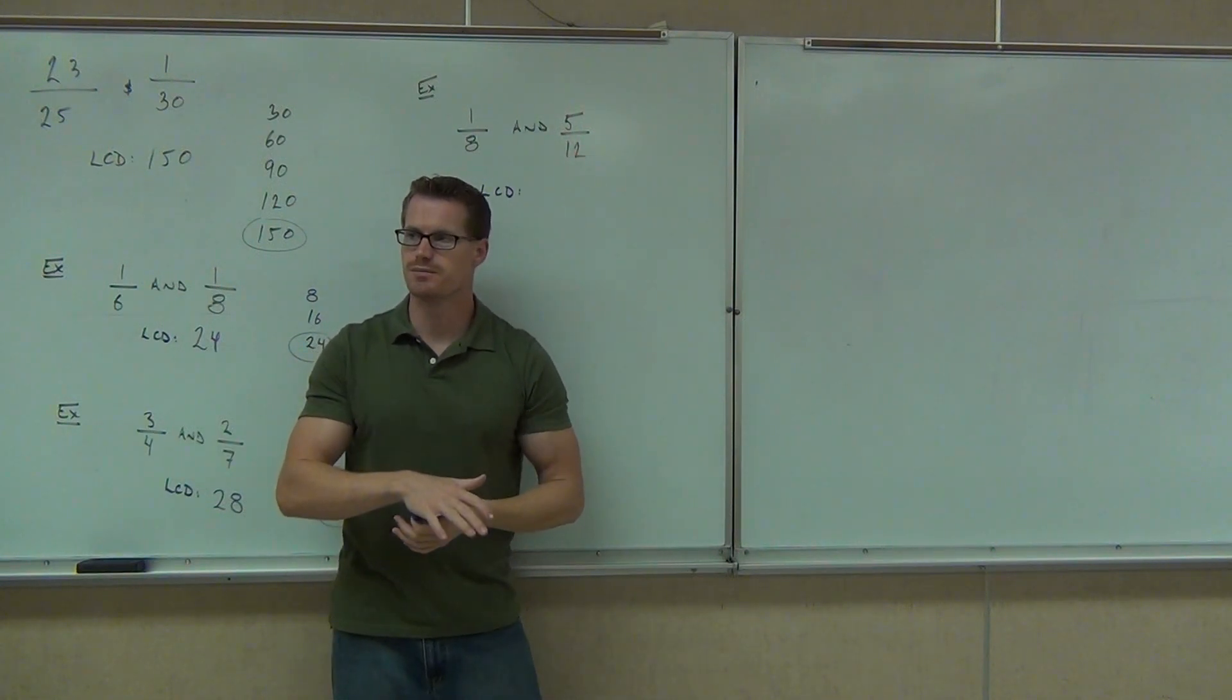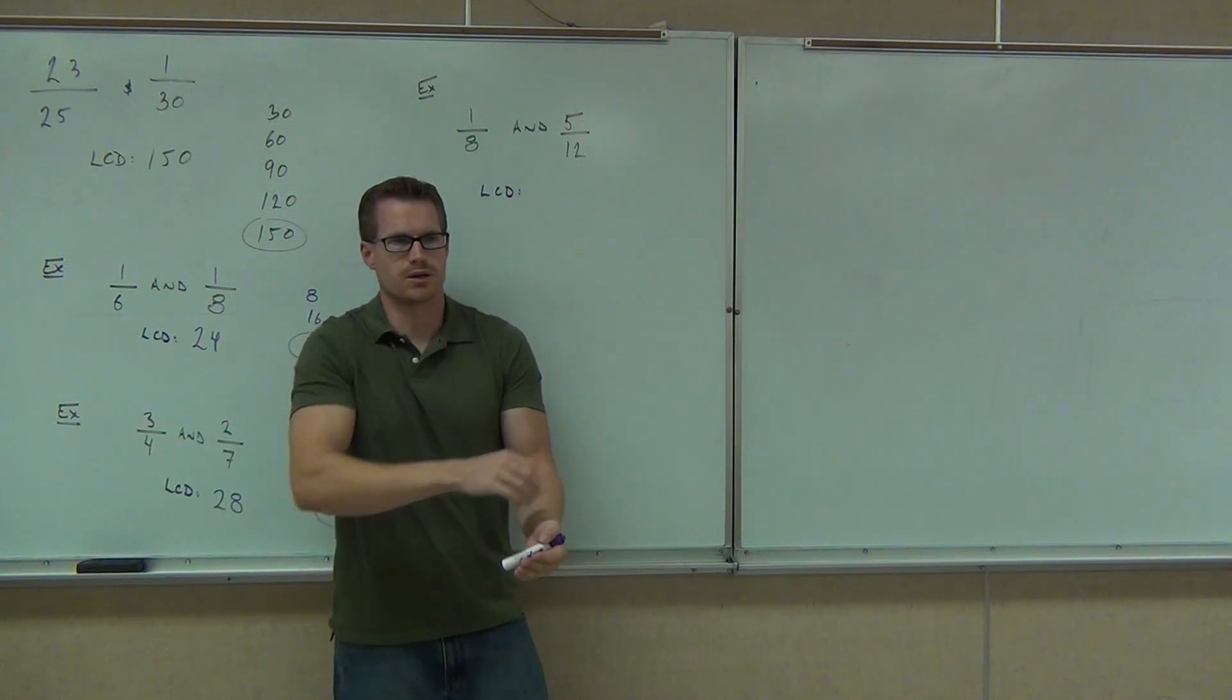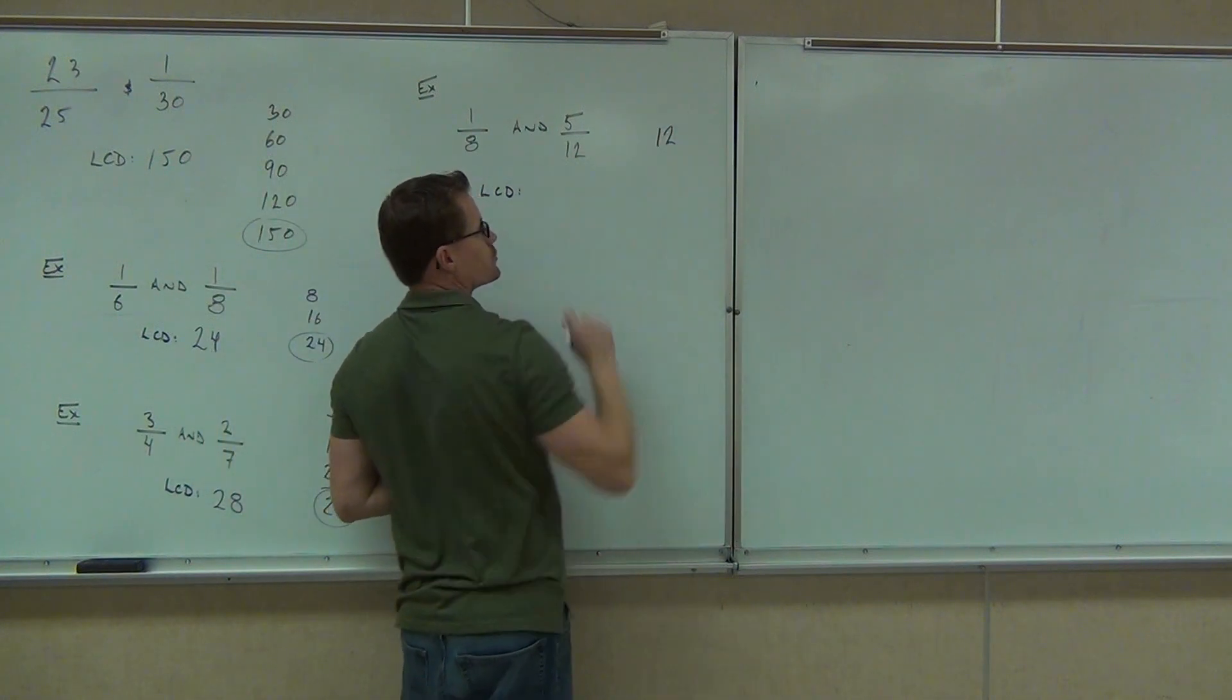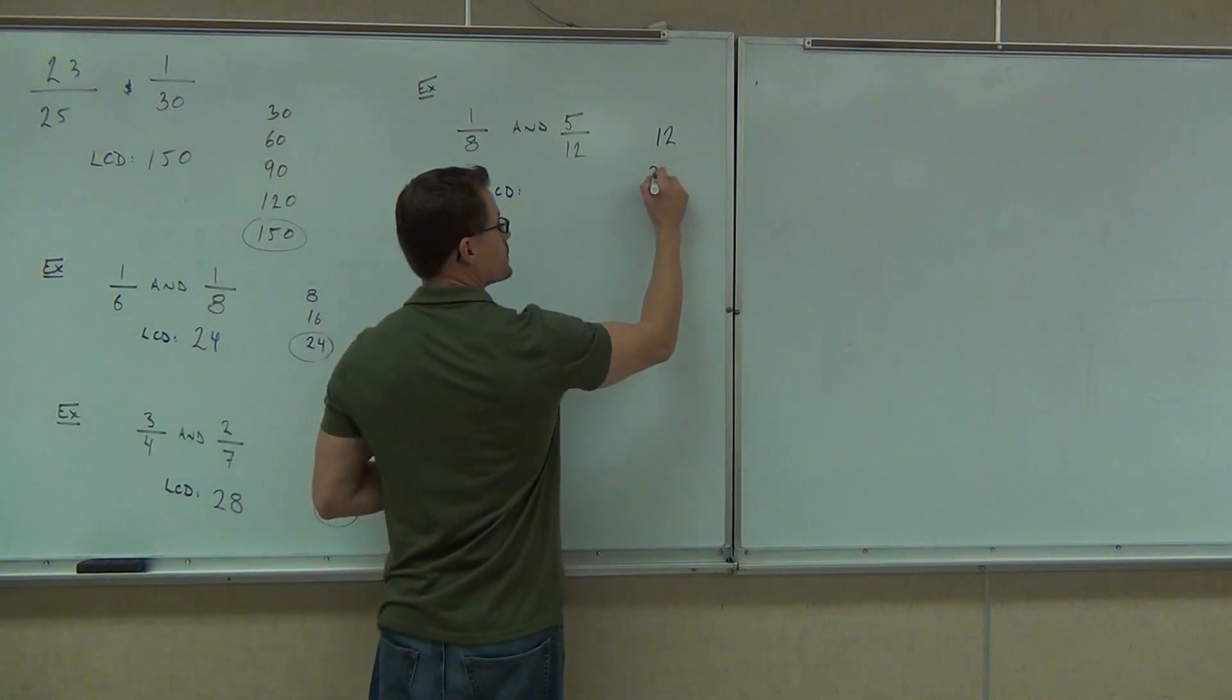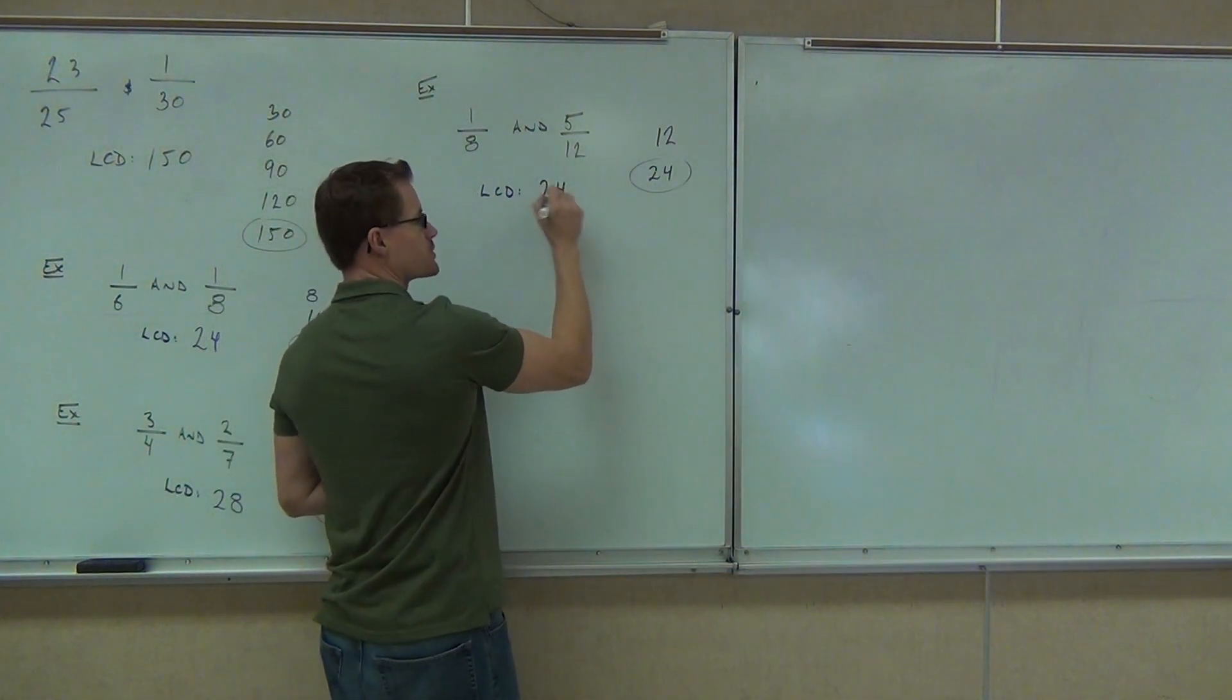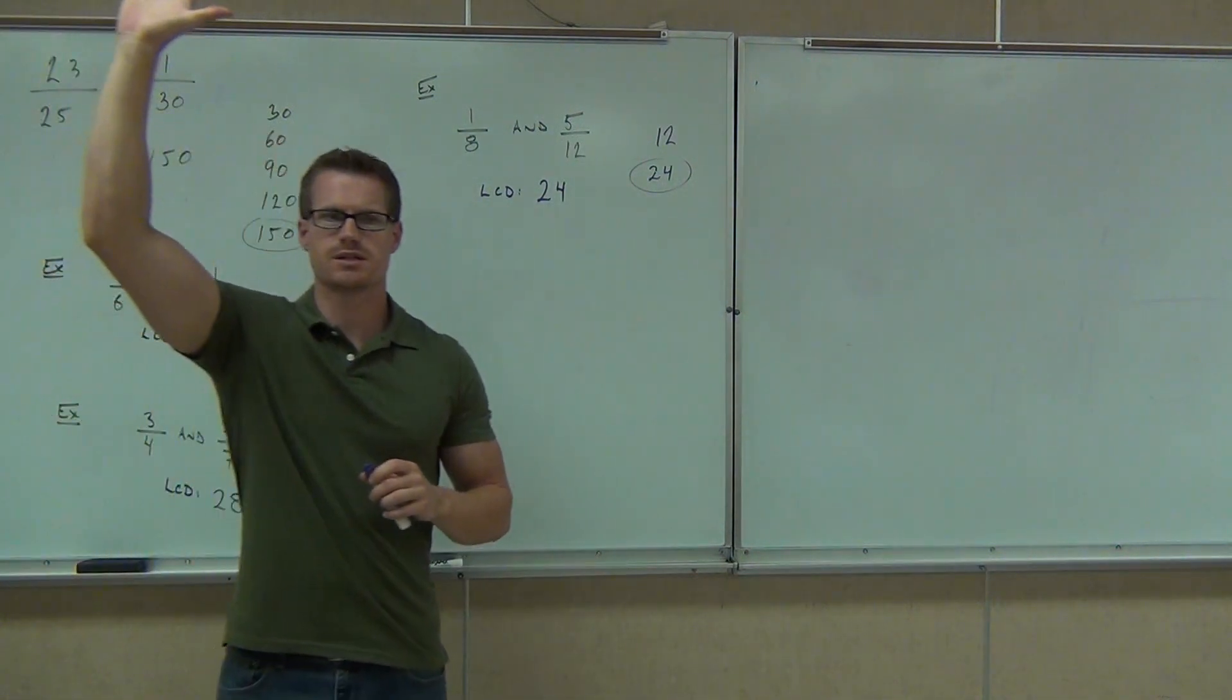So when you have a common factor, it lowers the LCD. You don't just have to multiply those two numbers. That's what I'm trying to get across to you. So in our case, we'll still do it the same way. We'll still do twelve. Does eight go into twelve? We check the next one, which is 24. Does eight go into 24? Yeah. Yeah, that's it. As soon as you find that number, that's our LCD. Raise your hand if you're okay finding this LCD stuff. Good.